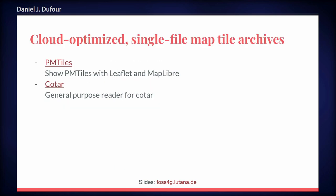Then we have cloud-optimized single-file map tile archives, which are basically a replacement for your tile server that can be used on object storage. There are two of them: one is PMTiles and the other is COTar, which is cloud-optimized TAR — which sounds rather weird, but is a thing. COTar is a general-purpose reader for COTar, and PMTiles has implementations for both Leaflet and MapLibre.